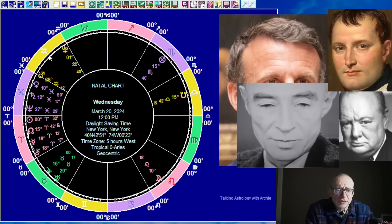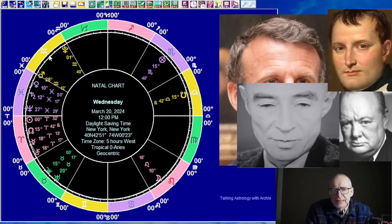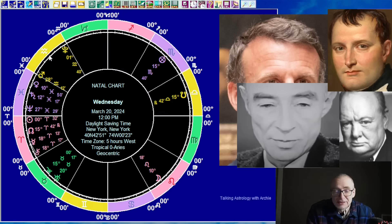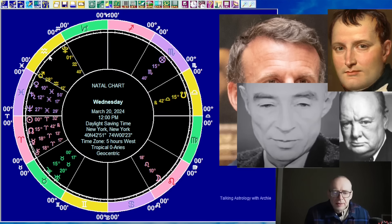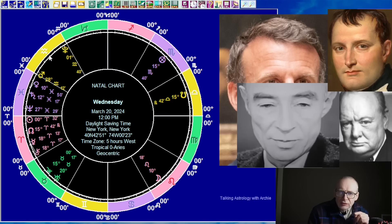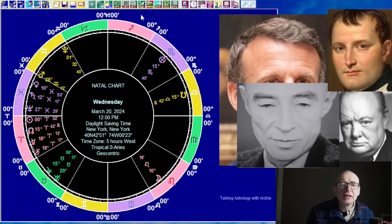Jupiter on the Mars-Pluto midpoint is really the most important thing going on today — certainly more important than Mercury decile Saturn. Before I look at the 12 signs, I want to quickly look at the heliocentric situation today. This shows the positions of the planets from the perspective of the sun — or rather, from putting the earth in the center of the solar system. This is a heliocentric perspective.